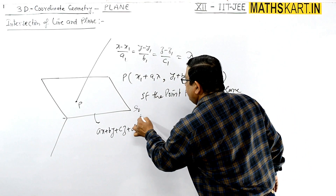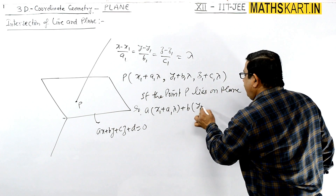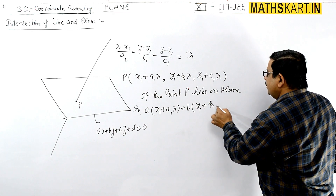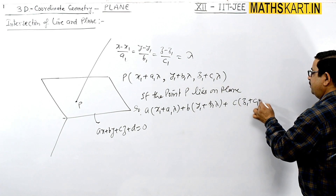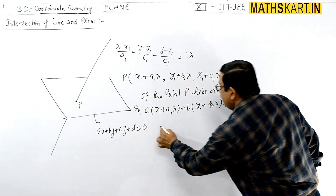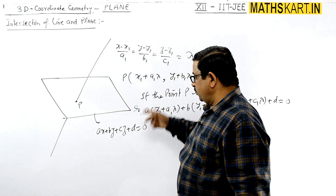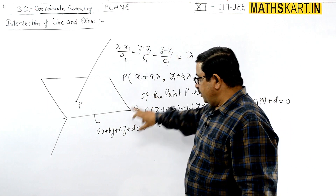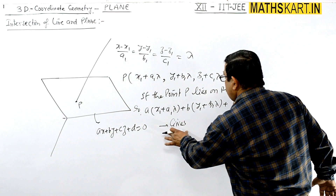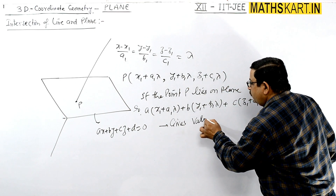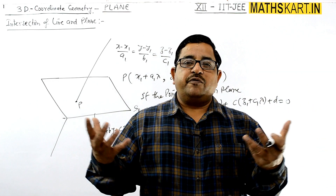Substituting P into the plane equation: a(x1 + a1·λ) + b(y1 + b1·λ) + c(z1 + c1·λ) + d = 0. Since all values a1, b1, c1, x1, y1, z1, a, b, c are known, this gives us the value of lambda. Once lambda is found, we can solve for whatever unknown is asked.